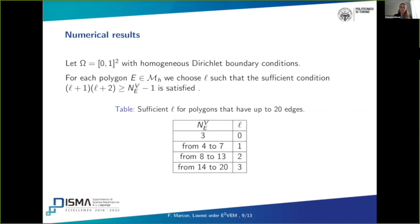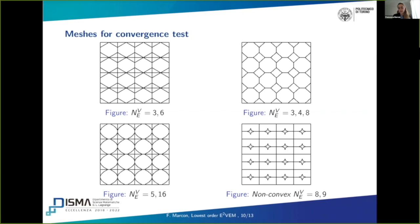First, before giving these results, I want to focus on the choice of L that has to be done for each polygon in order to satisfy the sufficient condition that we have just seen. And here I present a table where we see that, as expected, L behaves as the square root of the number of vertices, and this says that L increases slowly with respect to the number of vertices of the polygon. We use these four types of meshes for the convergence test. Here, I want to focus on the types of polygons that are presented in these four meshes, in order to link these values with the choice that we have to make of the parameter L in the different polygons.